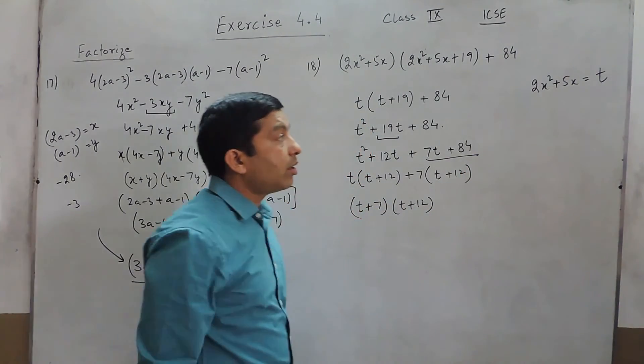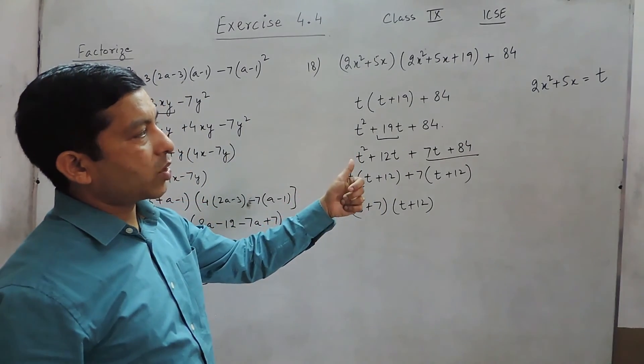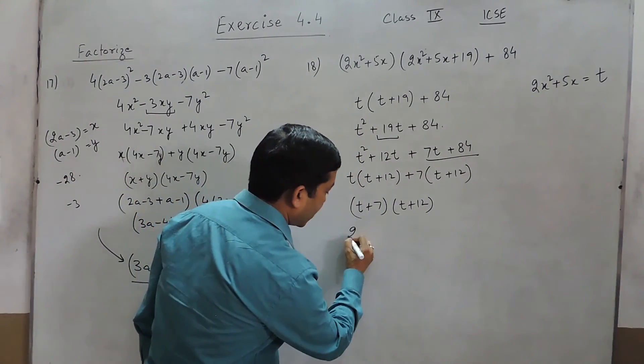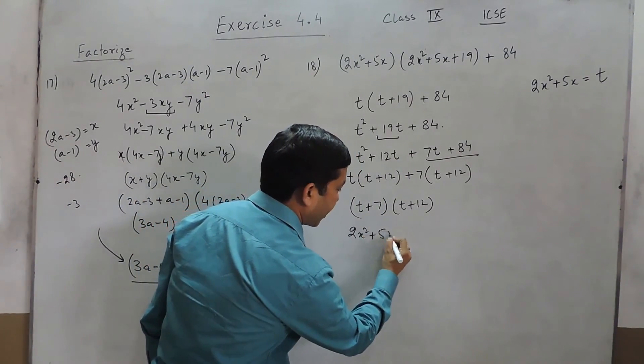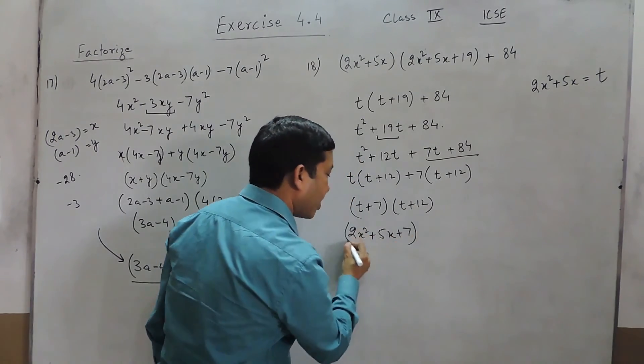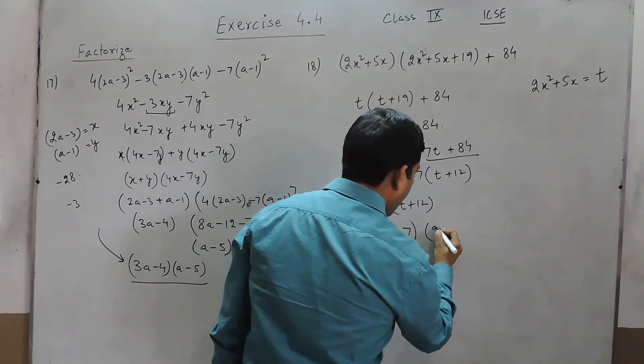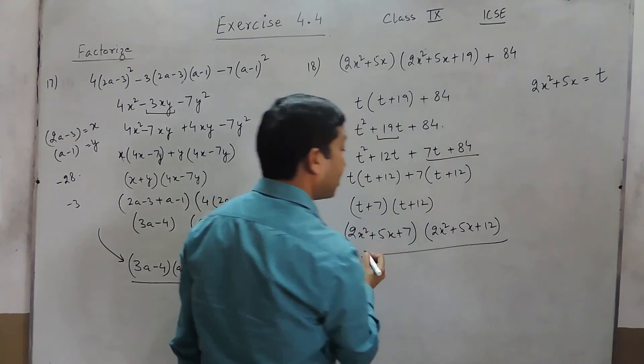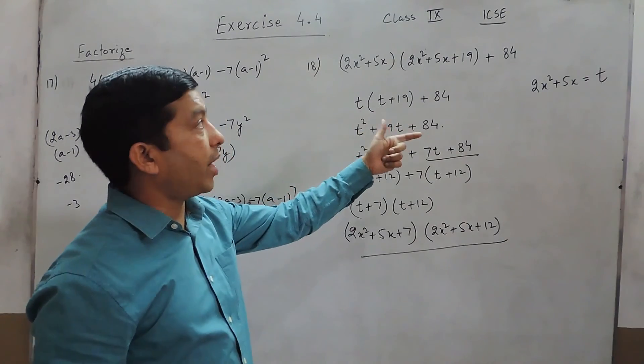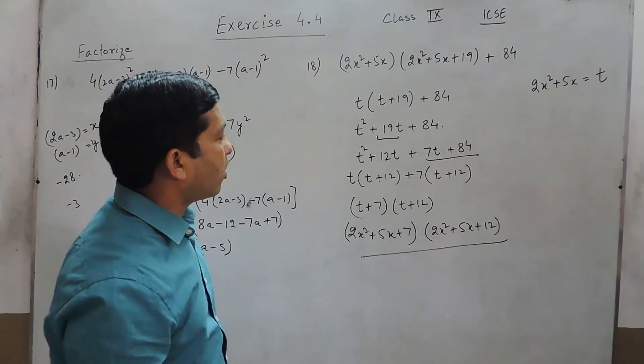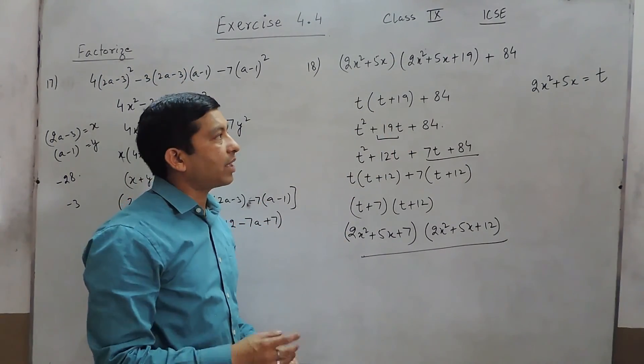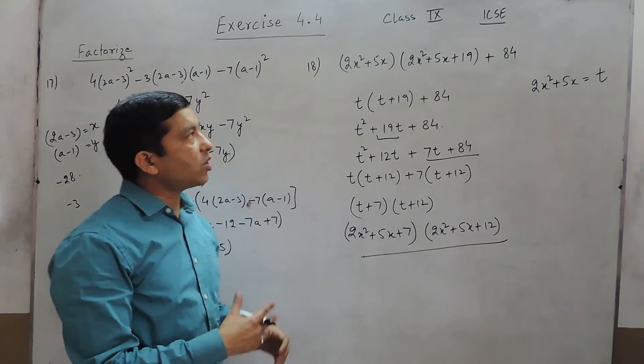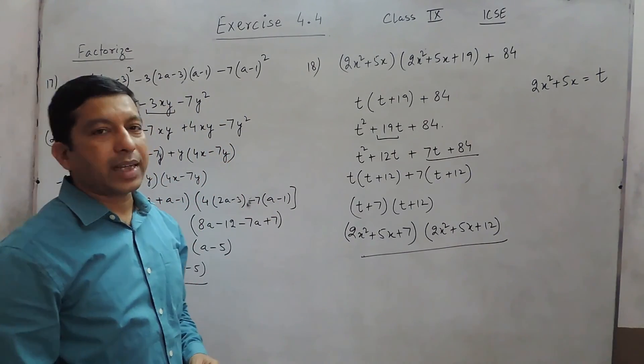If I put the value of t as 2x² + 5x, again it is (2x² + 5x + 7) as the first factor and (2x² + 5x + 12) as the second factor. This can also be solved in another way but we always try to find out the least possible or the easiest manner. If in case you have any problem regarding this you can email us.